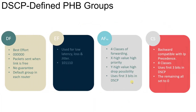To recap per-hop behavior: whenever a packet traverses through a router, the router takes certain decisions based on policies and SLAs, determining what action has to be taken on those packets. There are four different PHB types: Default Forwarding (DF), Expedited Forwarding (EF), Assured Forwarding (AF), and Class Selector (CS).